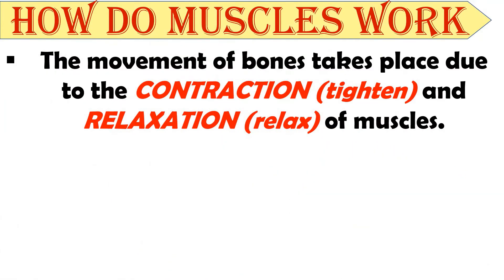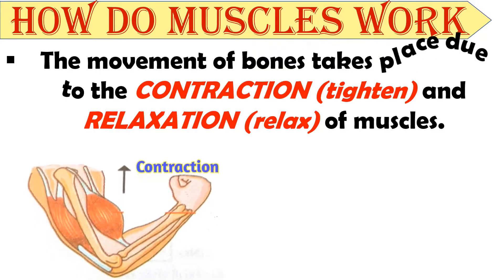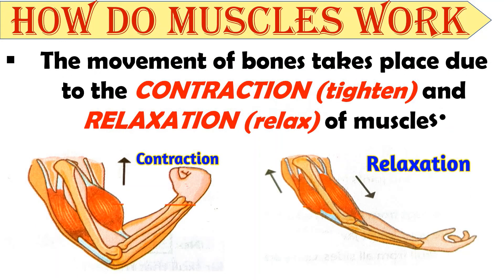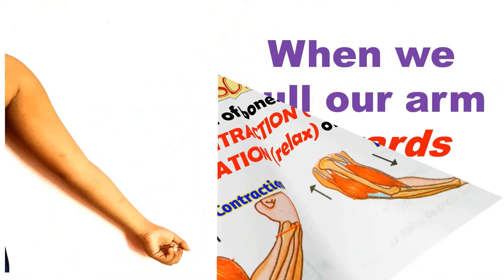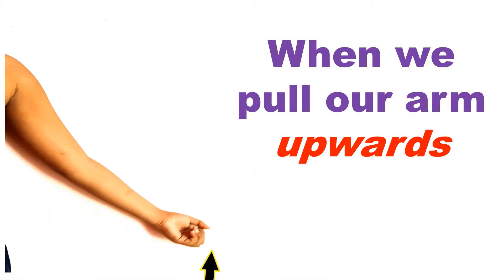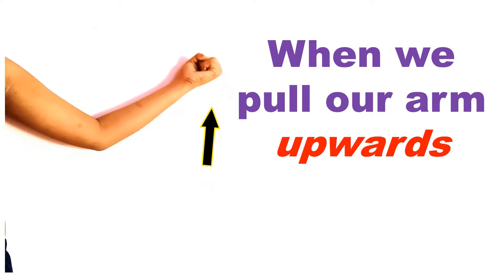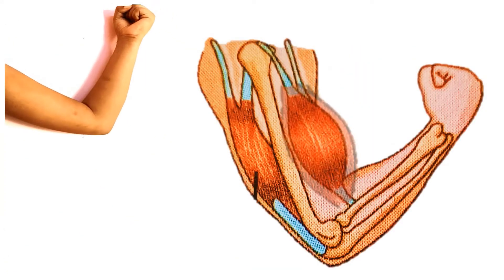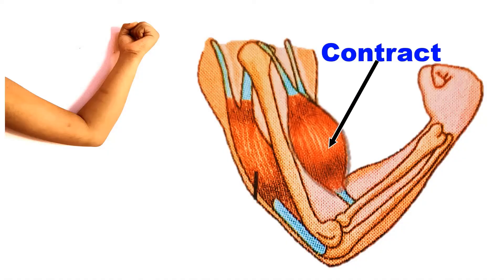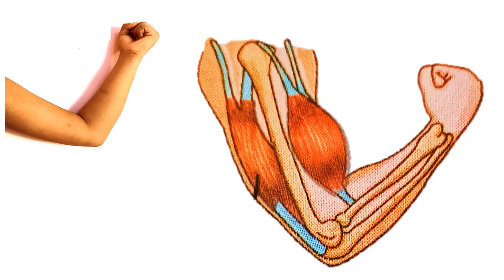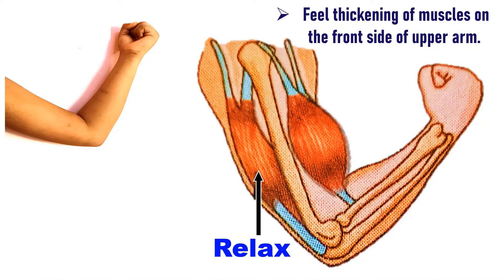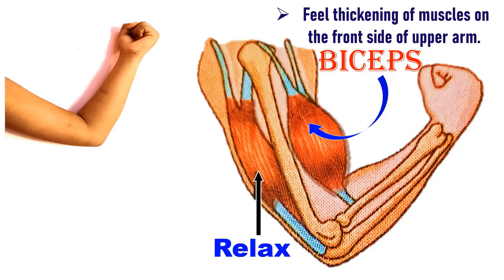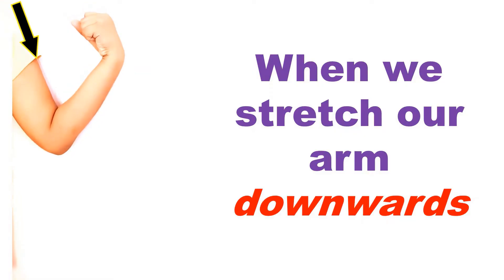Now let's see how muscles work. The movement of bones takes place due to the contraction and relaxation of muscles. For example, when we pull our arms upward, the muscles on the front side of the upper arm contract and the muscles on the back side of the upper arm relax. You can also feel the thickening of muscles on the front side of the upper arm, and these muscles are known as biceps.